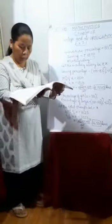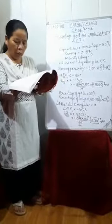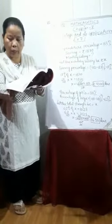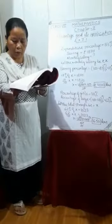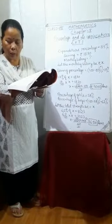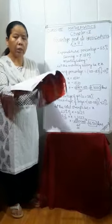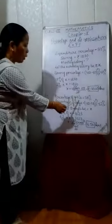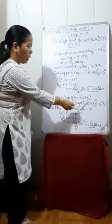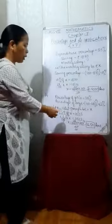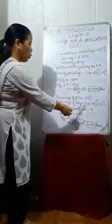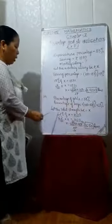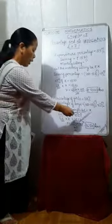Now see question number 14. In a school, 38% of the students are girls. If the number of boys is 1023, find the total strength of the school. Percentage of girls is given as 38%, so we can find out the percentage of boys, which is 100 minus 38% equals 62%. Let the total strength be X.